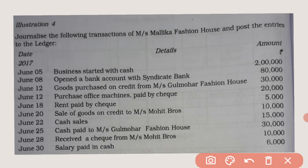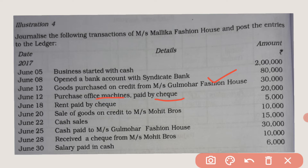With the help of these transactions, you have to prepare the journal entry. For the first transaction — business started with cash — cash account is debited to capital account. Then, opened a bank account with Syndicate Bank: bank account and cash account. Then, goods purchased on credit from Majors Golmohar Fashion House: purchase account and Golmohar Fashion account. Next, office machines purchased paid by cheque — when cheque is mentioned, you write bank account — so office machine account and bank account.